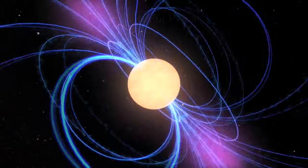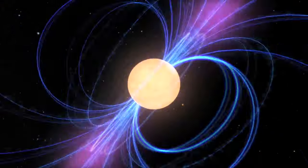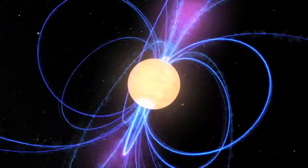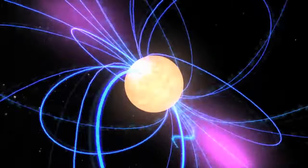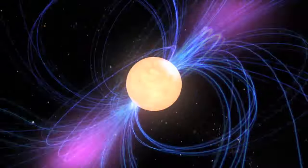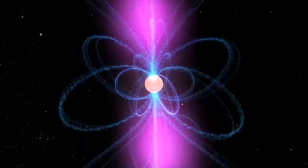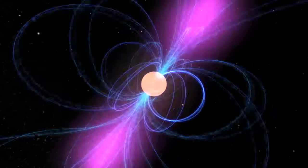You'll recall from the globular clusters and supernova chapter in the How Far Away Is It video book that a pulsar is a rapidly rotating neutron star with a powerful magnetic field. The result is a sort of magnetic lighthouse.